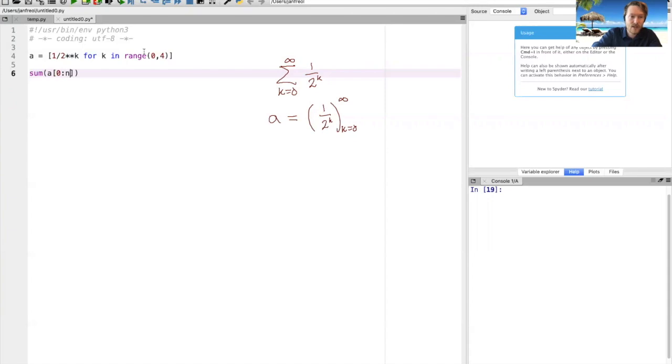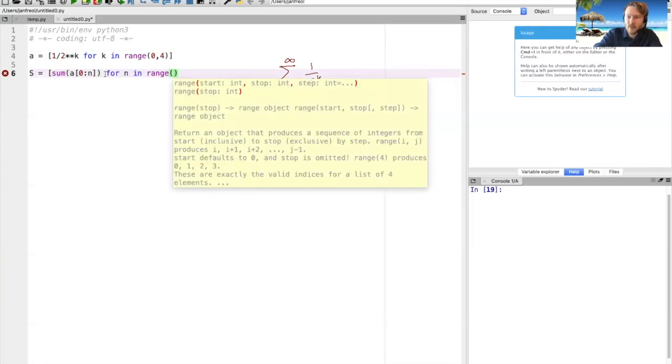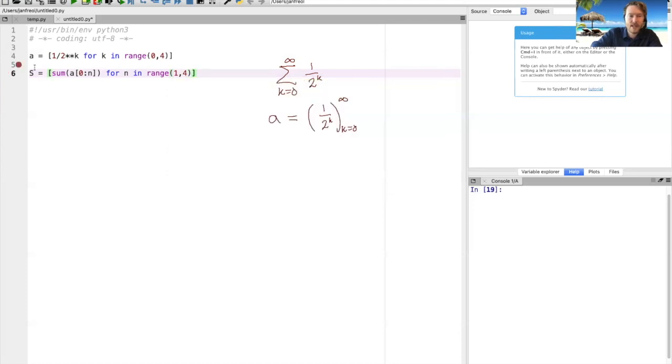If I want all of them, I can create the list S like this, for N in range, well I could start at zero but that would give me the empty sum first, so I'd rather start at one and then end at four.